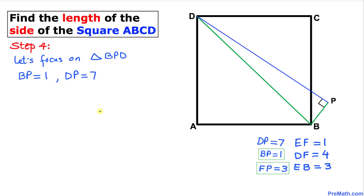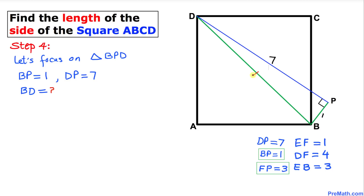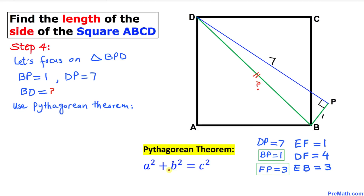Now let's focus on right triangle BPD. We know BP is one unit and DP is seven units, and we need to find side BD. Since this is a right triangle, we will use the Pythagorean theorem: a² + b² = c². Here, a corresponds to BP, b to DP, and c to the hypotenuse BD.